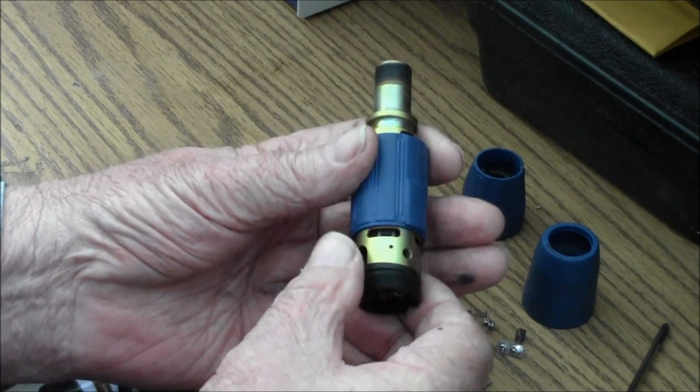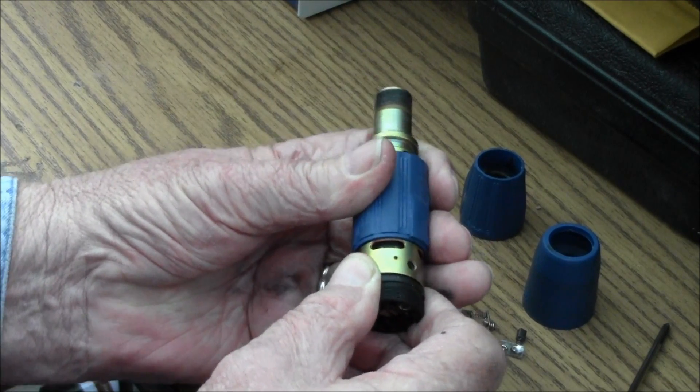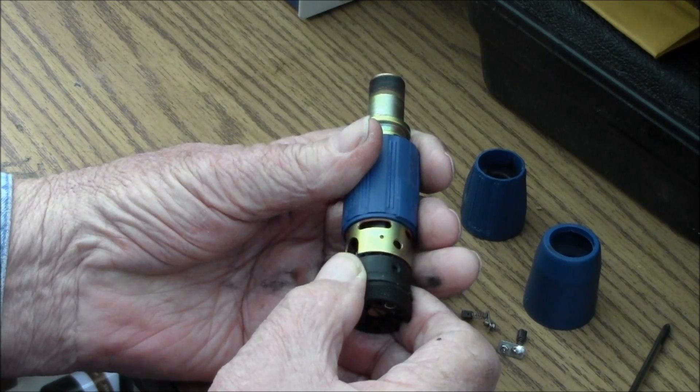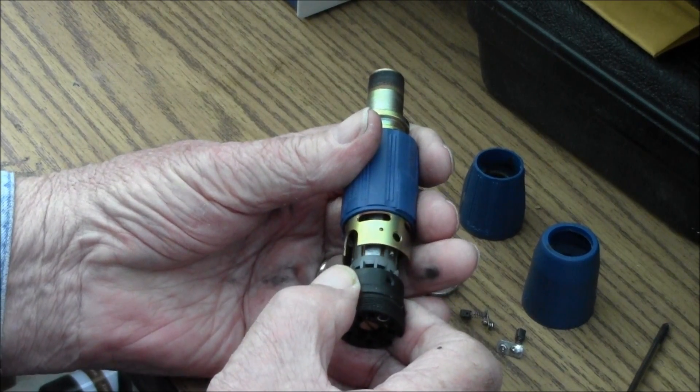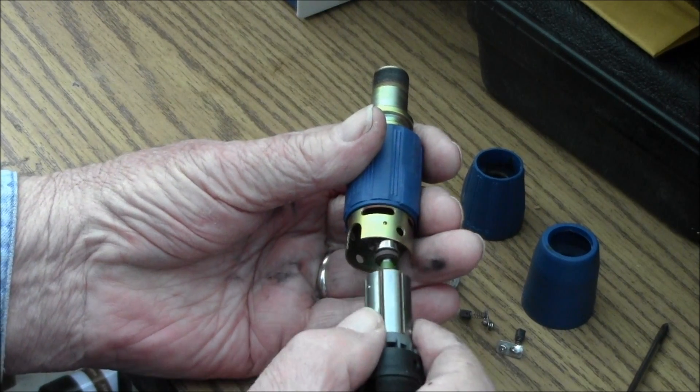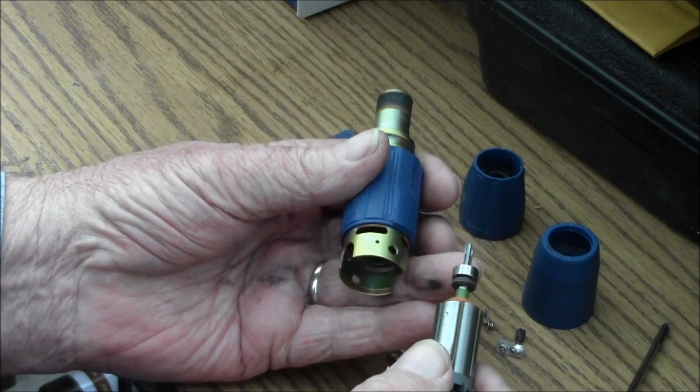After you get that out, this piece just wiggle it a little bit. You'll feel a tug on it. That's the magnetic armature. Don't worry about it. You're not pulling a spring or anything. Just pull it on out.